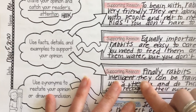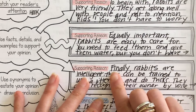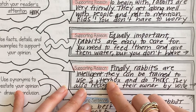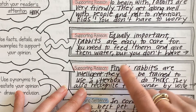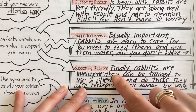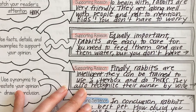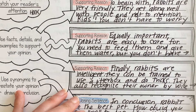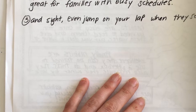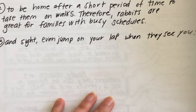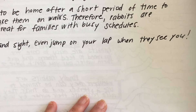For my third reason I chose 'finally.' I wrote: 'Finally, rabbits are intelligent.' Again, I didn't just stop there — I slowed down and added details: 'They can be trained to use the litter box and do tricks. They also recognize their owner by voice and sight, and even jump on your lap when they see you.'